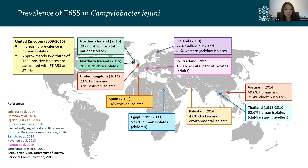We're interested in the Campy type 6 because a high prevalence was found in isolates from around the world in countries such as Vietnam, Egypt, and Finland. In the UK, a study in 2015 found that nearly 30% of chicken isolates were type 6 positive, and recently published data suggests the actual figures could be much higher. Therefore, it is important that we look into the role of the type 6 in Campy to understand why these strains are becoming so prevalent.